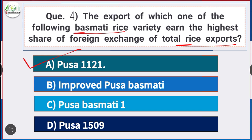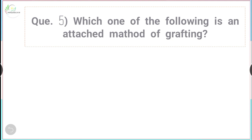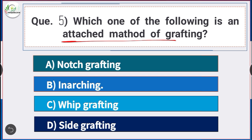Question number 5: Which of the following is an attached method of grafting? Answer is option B — inarching. Inarching is the attached method of grafting.